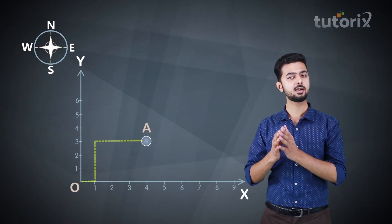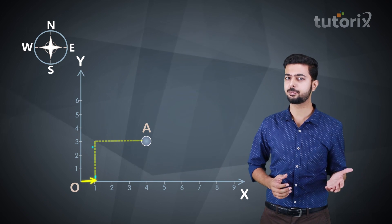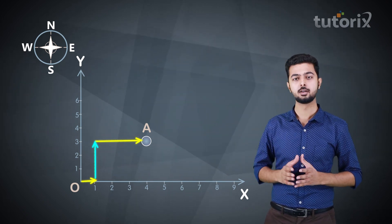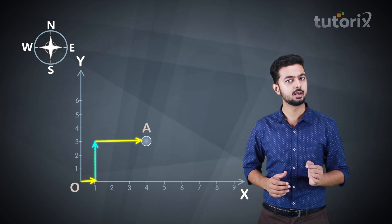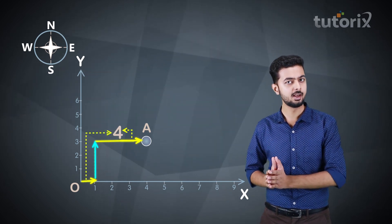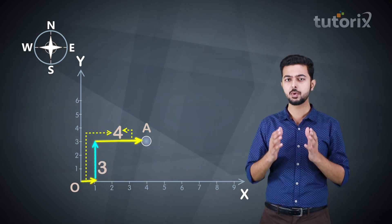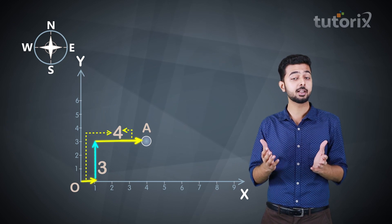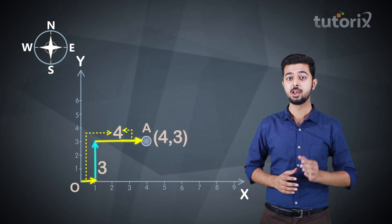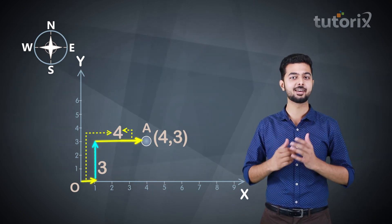Now let's focus on car A again. What if it had taken some other path to reach its destination, like the one shown here? Even in this case, it would have travelled a total of 4 km in the x-direction and a total of 3 km in the y-direction. So whichever path you may take, the final result will be the same — 4 km along x and 3 km along y direction.